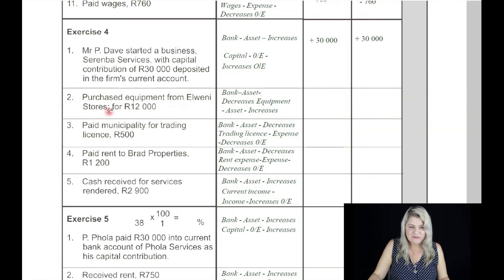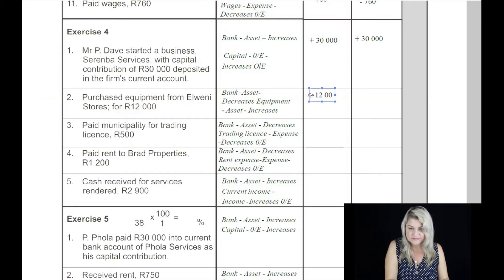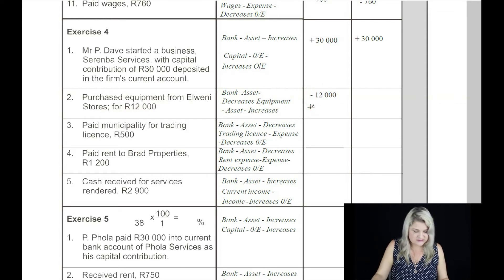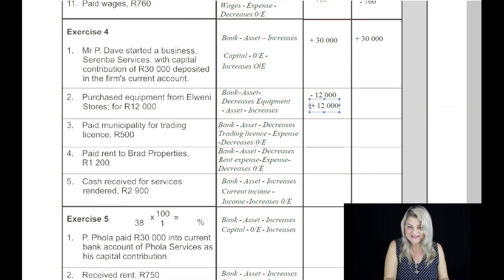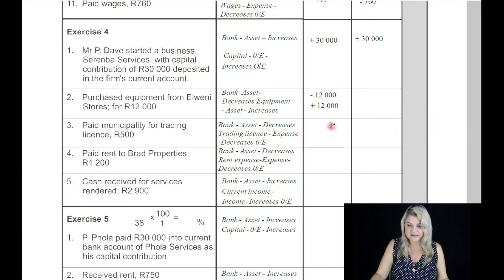On the second: purchase equipment from Elweni Stores for 12,000 Rand. They're both assets. The bank is going to decrease by 12,000 Rand and the other asset, which is equipment, is going to increase by 12,000 Rand. The overall effect is zero because the one cancels out the other.